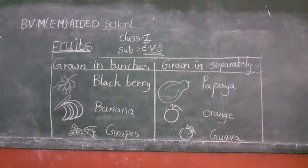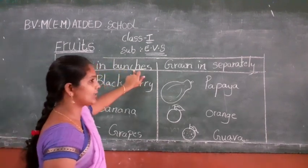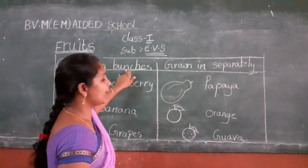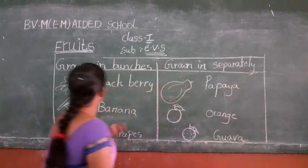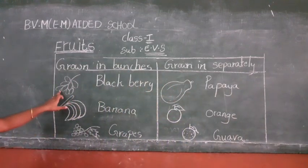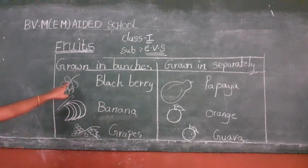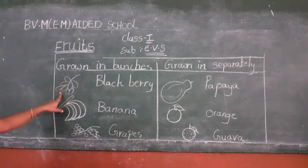Okay children, next. Look at this - grown in bunches. Grow in bunches. Next, grow in separately. Bunches means like this children - so many small fruits together. We call this bunches.